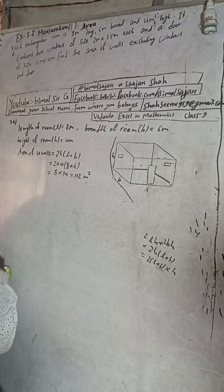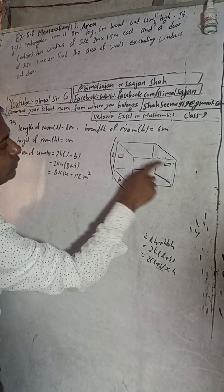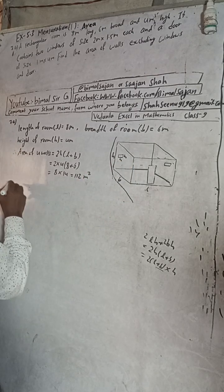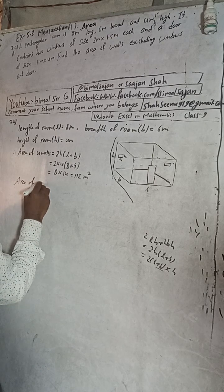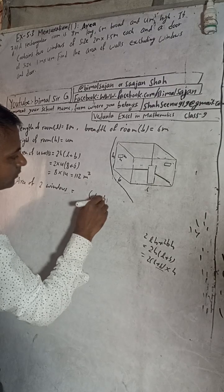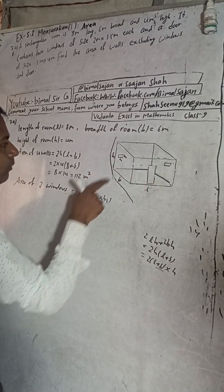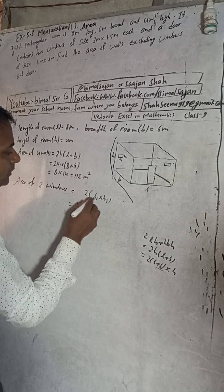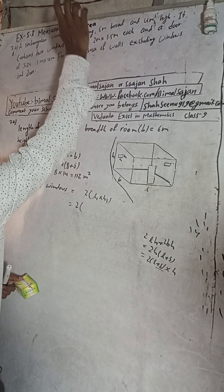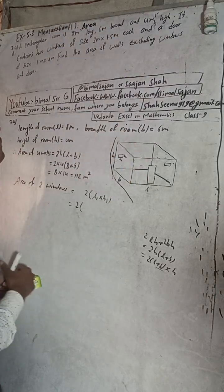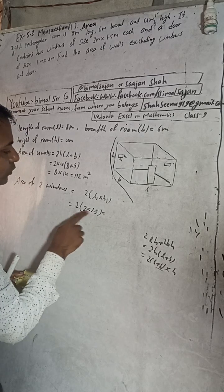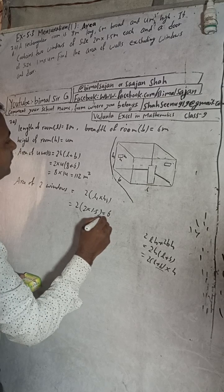Now it is given two windows. Suppose these are the windows, this is length L1 and this is H1. Area of two windows, area of one window would be L1 into H1, but there are two windows, so multiply with 2. The size of the window is 2 meter into 1.5 meter. So 2 times 2 times 1.5 equals 6 square meters.